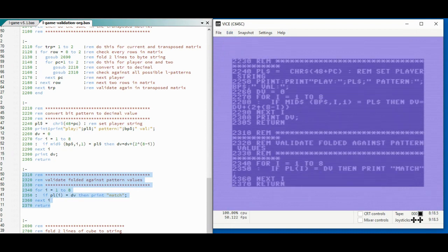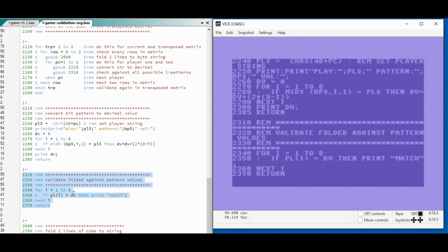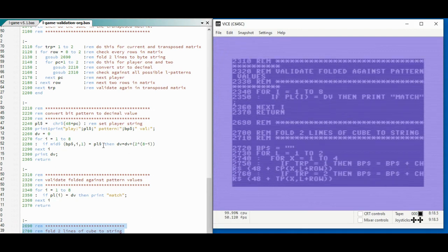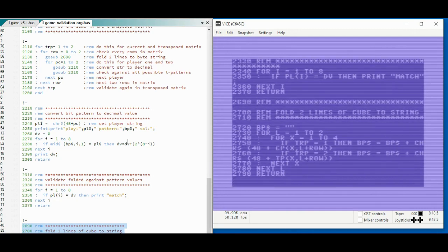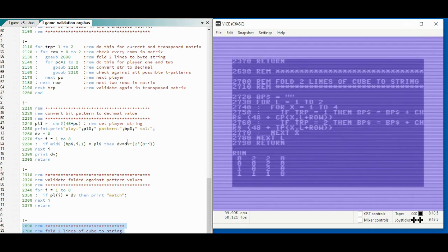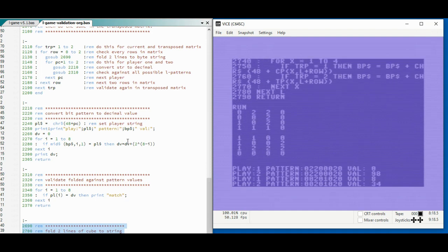Now that all the required main routines are in place, we can run the full program. That is the program that is used to build a proof of concept for defining the play field and comparing the patterns a player can make. Once we run the program, the play field is printed, including the transposed version of it. Then each two lines are combined as one string representing the positions taken by a player, followed by its bit pattern and decimal value. If that corresponds to one of the eight pattern values, then we display that a match is found. You can download this code also from my GitHub and play with it a bit if you like. You can also find the complete program that is really playable.